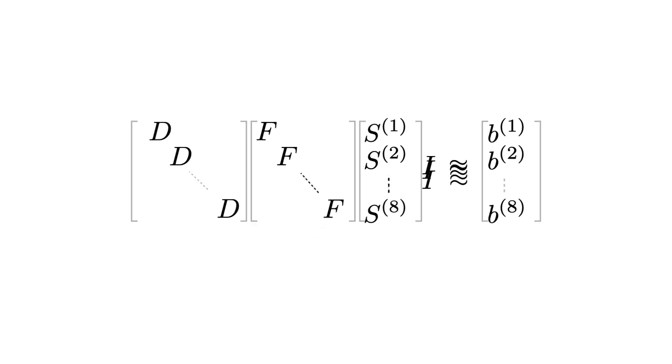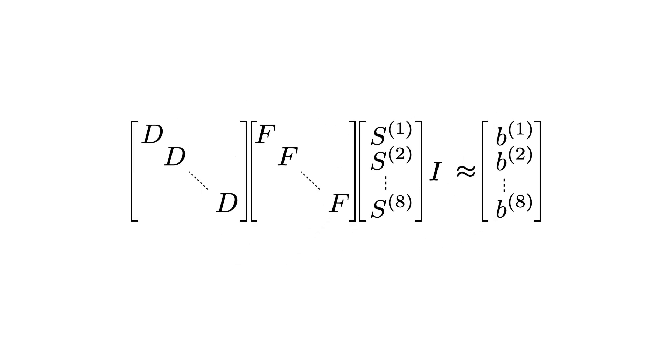If our image is correct, then this value on the left, DFS1i, should approximately equal the data that was collected by the MRI machine from the first coil. We could repeat it for the second coil, and indeed, we can repeat it for all eight coils. These expressions can all be combined into one single expression, as shown here.